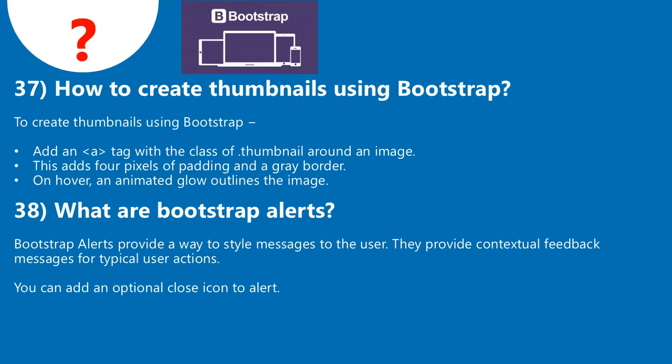Question 37: How to create thumbnails using Bootstrap? To create thumbnails using Bootstrap, add an a tag with the class of .thumbnail around an image. This adds 4 pixels of padding and a gray border. On hover, an animated glow outlines the image.